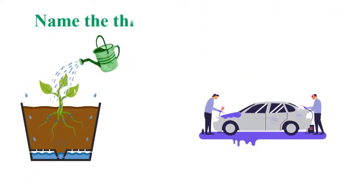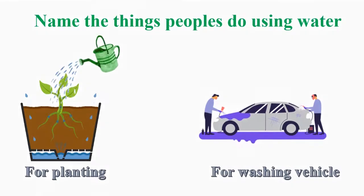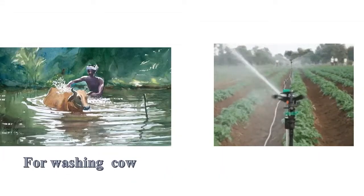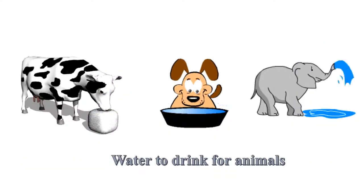Name the things people do using water. For planting, for washing vehicle, for washing cow, for agriculture, water to drink for animals.